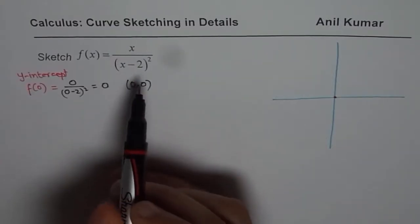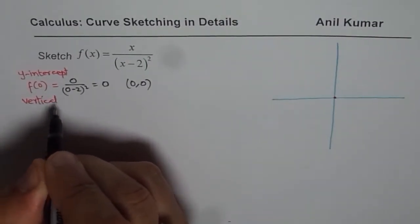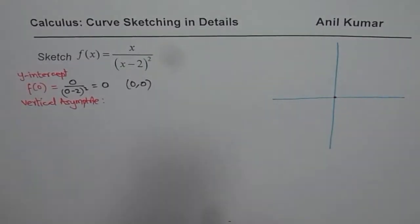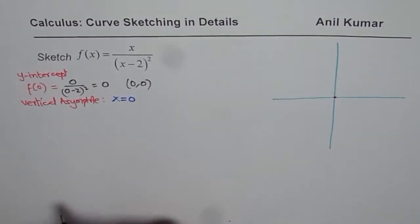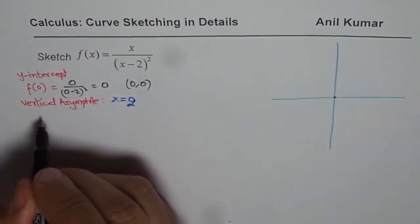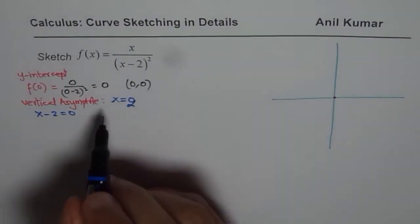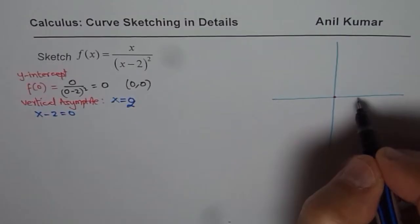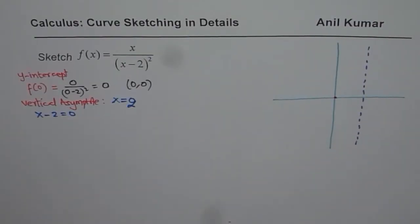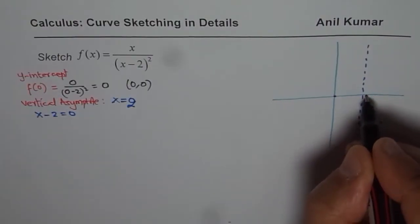Observing the equation, we see there is a vertical asymptote. The vertical asymptote is at x = 2, since the denominator equals zero there. We set x - 2 = 0 and solve to get x = 2. Let me sketch a vertical dotted line at x = 2 on the graph. So this is the vertical asymptote at x = 2, and the origin is our first plotted point.